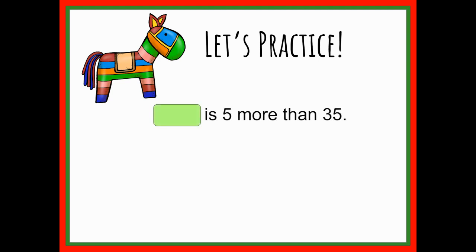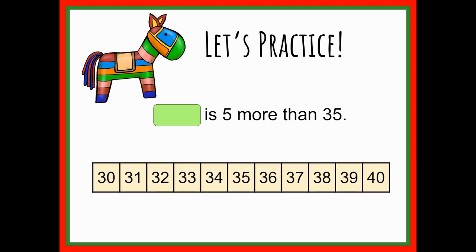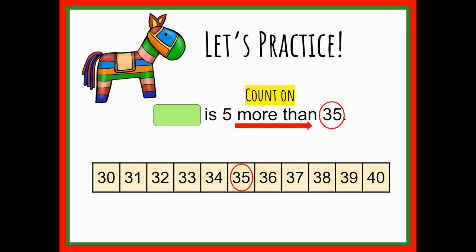Let's try another one. Blank is five more than 35. We bring in the number line; our red circle represents our starting point. Five more than means this number has to be greater than 35, so we count on. We count our five hops: starting on 35, we count 36, 37, 38, 39, 40 — that's five hops landing on the number 40. So 40 is five more than 35.